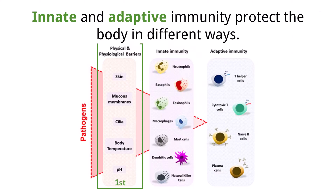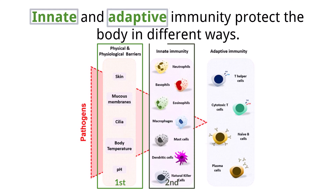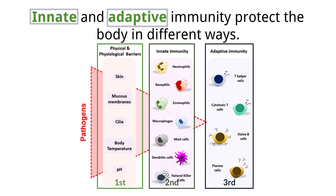The first line of defense keeps pathogens out, but as we know, that can fail. So when pathogens do enter the body, there are two different types of immune defense that the body has to fight them, and they are called innate immunity and adaptive immunity. Innate immunity is classified as our second line of defense, and if it doesn't work, our third and last line of defense is adaptive immunity. We will discuss both of these in more detail on the next few slides, but for now let's look at the broad differences between the two.